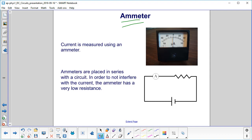In order to not interfere with the circuit, because you want most of this current getting through whatever circuit element you have, ammeters have a very low resistance.